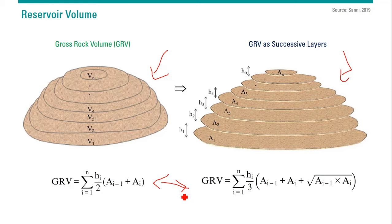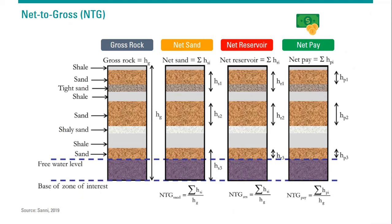We need to multiply the gross rock volume by net to gross. Gross means all; net means something that is very important. At the left, we have gross rock — the total rock volume — and then we eliminate the shale. The shale zone will not be calculated, so we have net sand. You can see the net sand is only three: net sand one, net sand two, net sand three, because we don't calculate the shale — shale will not be reservoir.